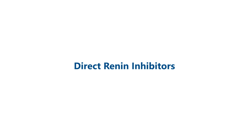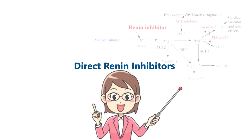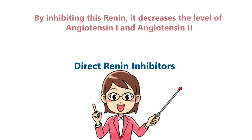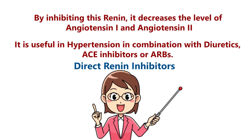Direct Renin Inhibitors: Renin converts angiotensinogen to Angiotensin 1. Direct Renin Inhibitors block renin directly, preventing this conversion. By inhibiting renin, it decreases the levels of both Angiotensin 1 and Angiotensin 2. Example: Aliskiren. It is useful in hypertension in combination with diuretics, ACE inhibitors, or ARBs.